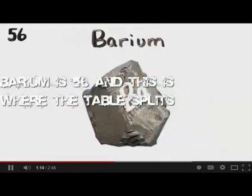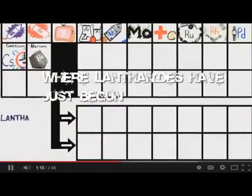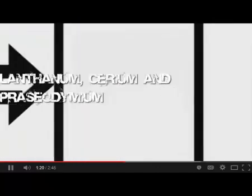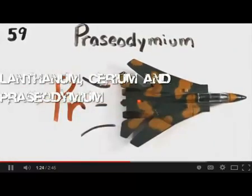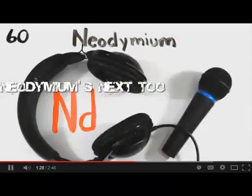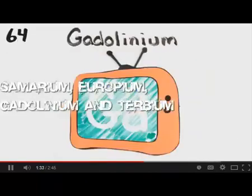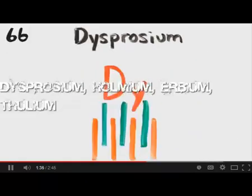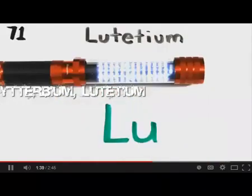Barium is 56, and this is where the table splits, where lanthanides have just begun. Lanthanum, cerium, and praseodymium. Neodymium's next to promethium, then 62, samarium, europium, gadolinium, terbium, dysprosium, holmium, erbium, thulium, ytterbium, lutetium.